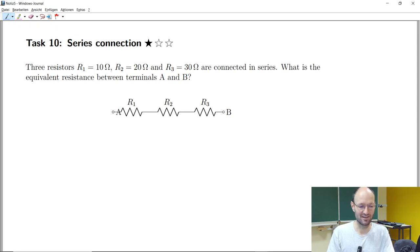Looking at task number 10 about the series connection, we have three resistors between these two terminals A and B. I don't know what happened here with the A, but this should be probably on the other side. And they have these values 10 ohm, 20 ohm, 30 ohm, and we are looking for the total resistance or equivalent resistance between these two terminals.